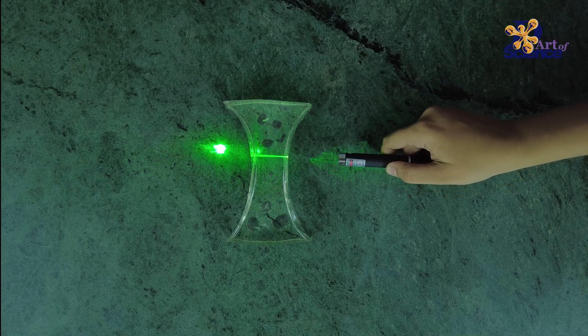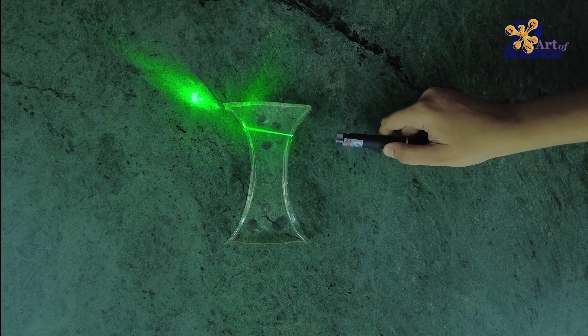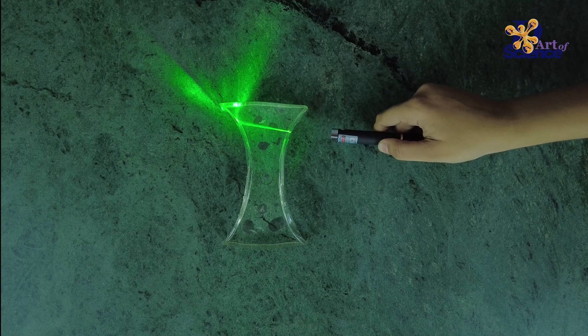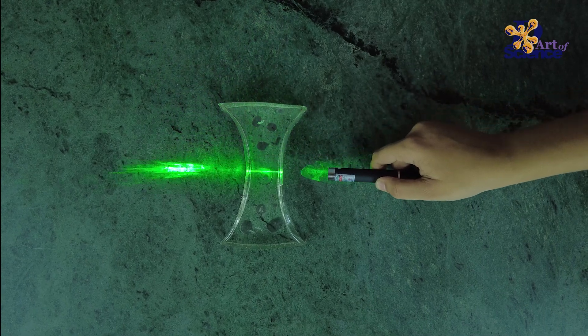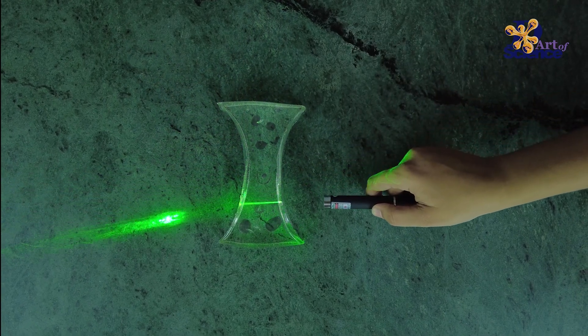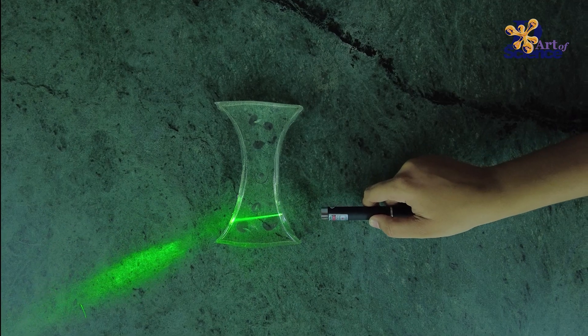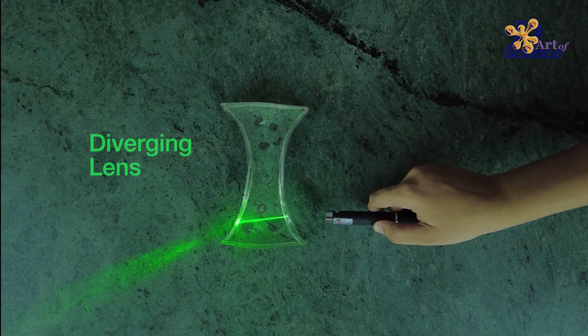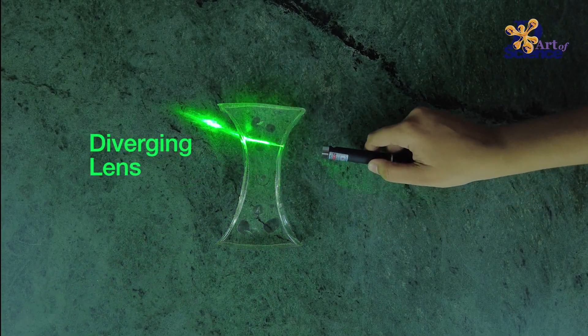On the other hand, when light falls on a concave lens, the bent light ray moves away from the lens. That is, the lens diverges the light rays. This is why they are known as diverging lenses.